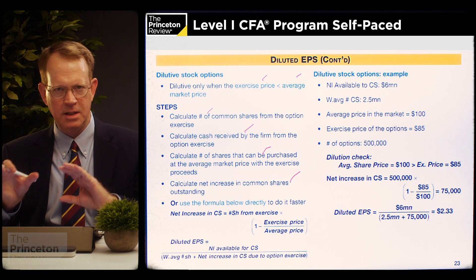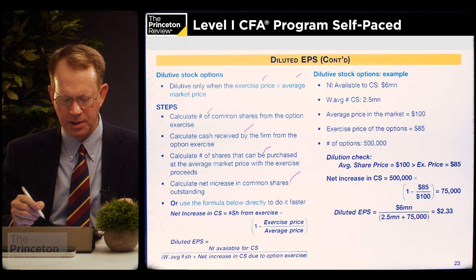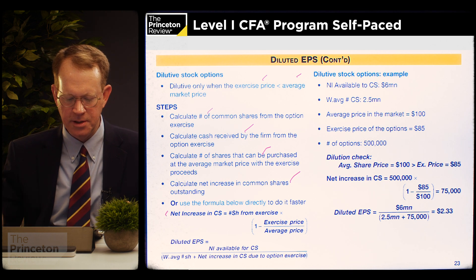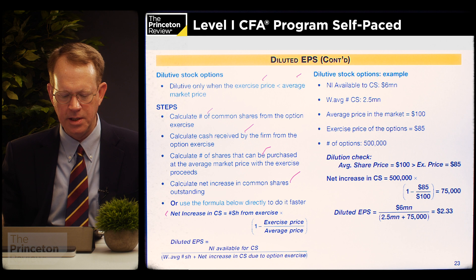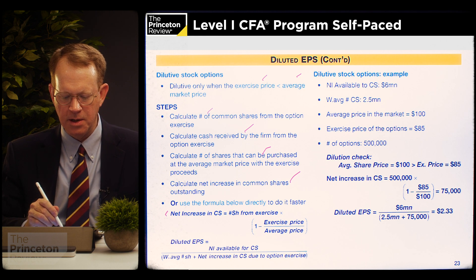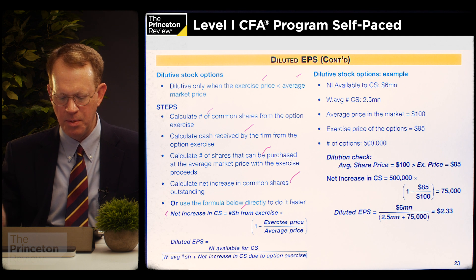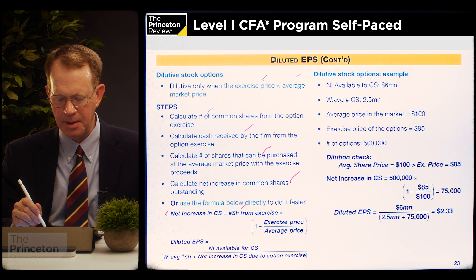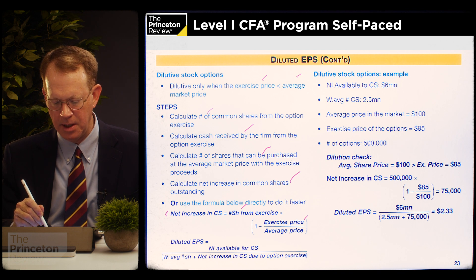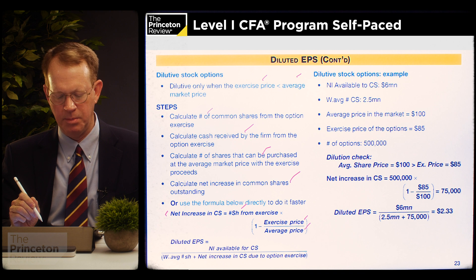Rather than work through that scenario in full, there is a shortcut. The net increase in common shares will be the number of shares from exercise of the options multiplied by a factor, which is one minus the exercise price of the option divided by the average price of the company stock for the period.